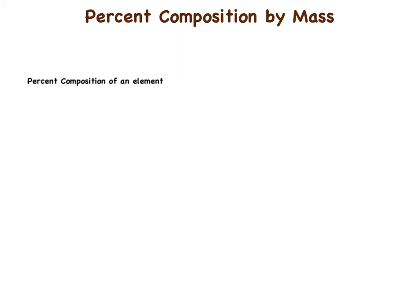Today we're going to be talking about percent composition by mass. So what is that? Let's look at hydrogen peroxide, H₂O₂, as an example. Percent composition by mass is very simple — it's basically the percent by mass of each element in a compound. For hydrogen peroxide, we have the hydrogen element and the oxygen element.